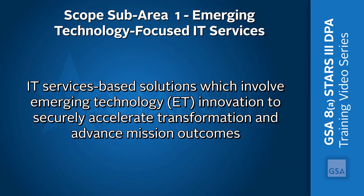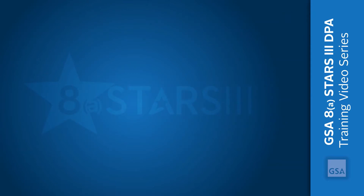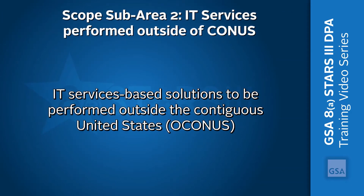A task order request fits in scope sub-area 1 if it includes IT services-based solutions with emerging technology as the focus. Scope sub-area 2 covers IT services performed outside of CONUS. This sub-area provides for IT services-based solutions to be performed outside the contiguous United States, OCONUS.